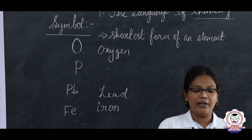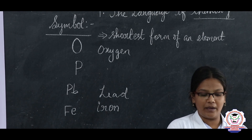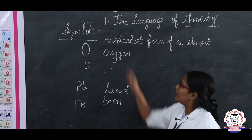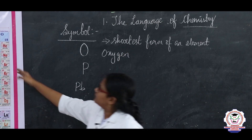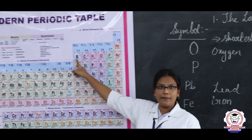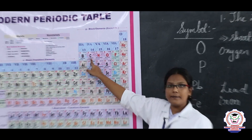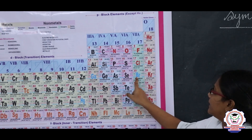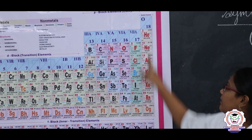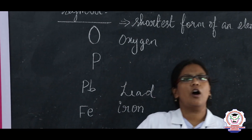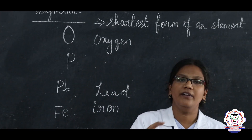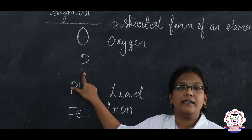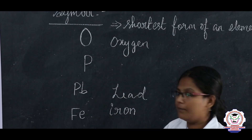This is what we need to know in the language of chemistry. Now, some of the common symbols: boron is represented as B, carbon as C, chlorine as Cl, bromine as Br. Symbols are represented as the shortest form of an element. This symbol gives the qualitative meaning that it is the shortest form of an element.